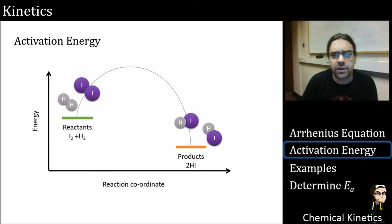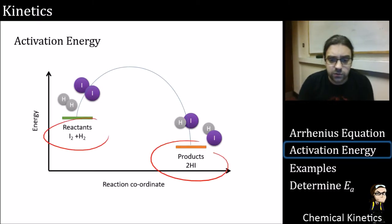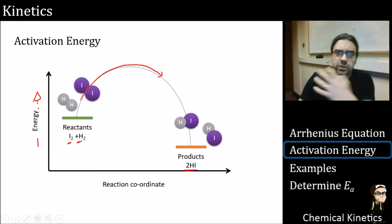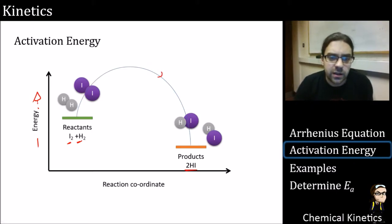You should be used to seeing diagrams like this. You start with the reactants on one side and you move to the products. And up on the y-axis, you have energy. So increasing energy goes up. To react from iodine and hydrogen to form hydrogen iodide, it has to go up over this hill here. This is kind of an energy diagram and it has to get up that high in energy.